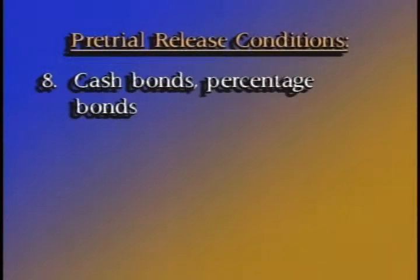Cash bonds and percentage bonds are also alternatives to detention to consider in cases where the defendant has resources to post such bonds. Both give the defendant a stake in appearing for trial and otherwise complying with the conditions of release. Under the Bail Reform Act, a cash or percentage bond should not be set as a condition where the defendant is clearly unable to post a particular amount. If you take that route, you are avoiding your responsibility either to allow release on conditions that can be met or to order detention.